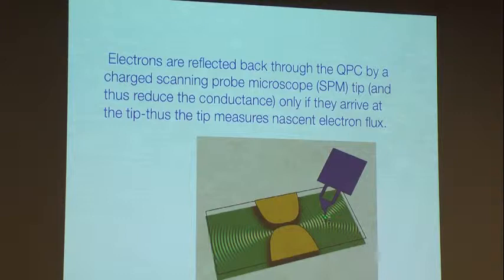If the scanning probe microscope, negatively charged, were placed somewhere and it was in the line of fire, so to speak, it could scatter electrons back through the quantum point contact, and it would become an indicator of the existence of the electrons. In other words, you could map the pattern of flow of the electrons through the device because you certainly can't scatter an electron back toward where you came if there isn't an electron there in the first place.